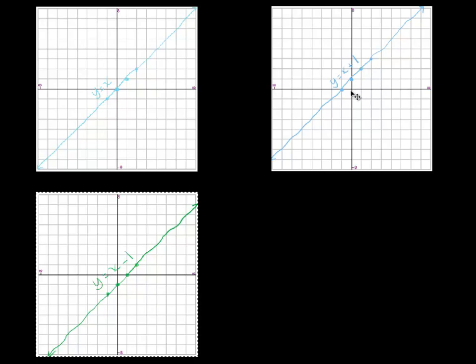But what's different about this line compared to the other two lines? Well, just like y equals x plus 1 seems to be moved up by 1, the line y equals x minus 1 seems to be moved down by 1. And that is no coincidence. This plus 1 is affecting the graph by shifting it up. This minus 1 is affecting the graph by shifting it down.